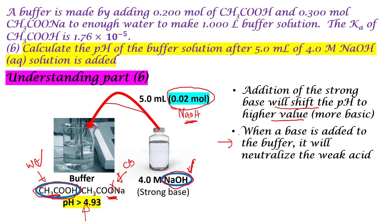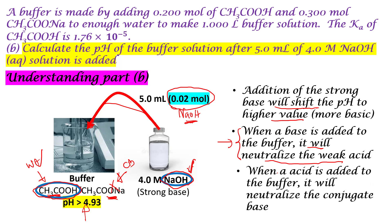The statement here summarizes this: when a base is added to the buffer, it will neutralize the weak acid — it is going to react with the weak acid. The converse: if instead we added an acid like hydrochloric acid, then when an acid is added to the buffer, it will neutralize the conjugate base. Because we're adding sodium hydroxide, it is going to react with the acetic acid present in the solution. Understanding this mentally is very important and will help us set up the reaction equation in the next step.